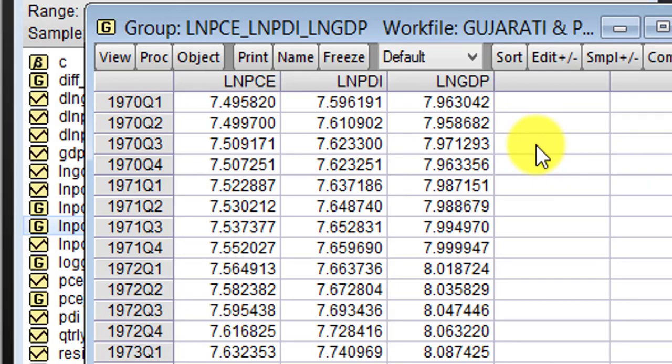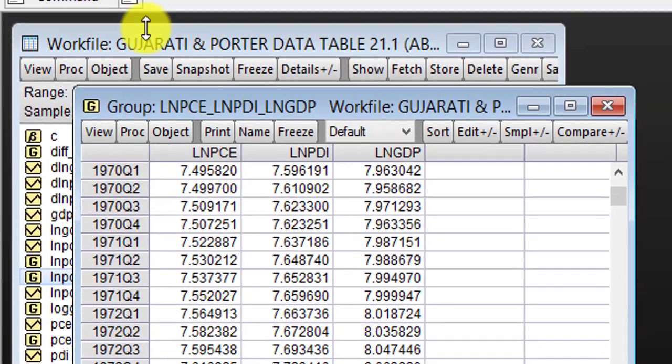Remember, cointegration test is absolutely not necessary under the assumption that these three variables are integrated of order 0. That is, they are stationary in levels. That is the assumption that we are using. So what do you have to do?